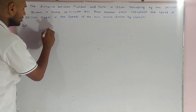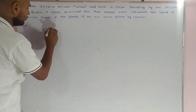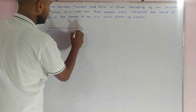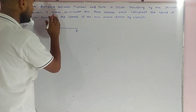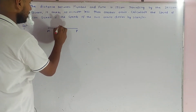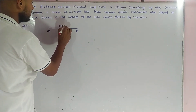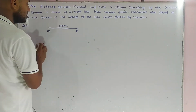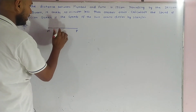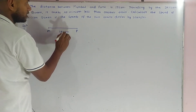Here, suppose from Mumbai to Pune there is a distance given that is 192 kilometers. This is the distance between Mumbai and Pune and it is 192 kilometers.